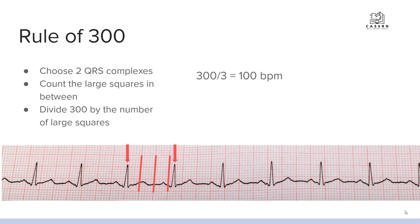You'll notice the previous method gave us 90 beats per minute, and this one gives us 100. The rule of 300 is a little more accurate because we're using a more finite method — counting something smaller. When you count in smaller increments, you get a more accurate number. Remember, this is only accurate if your patient has a regular heartbeat. If your patient has an irregular heartbeat, your numbers will be all over the place and not nearly as accurate.